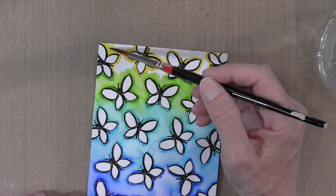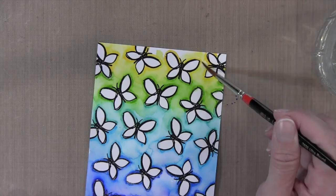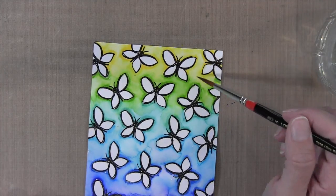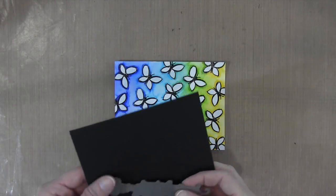When I got to the yellow, I was really careful about wiping the color off my brush whenever I got too much green on it because I wanted to make sure that I had a really vibrant yellow at the top. Now that that's done, I'm going to let it dry. In the meantime, I'm going to work on my sentiment.